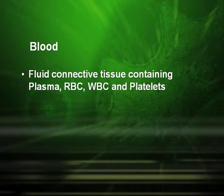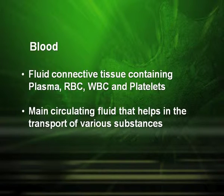Blood is the next type of connective tissue. It is a fluid connective tissue consisting of plasma, RBC, WBC, and platelets. It is the main circulating fluid that helps in the transport of various substances.